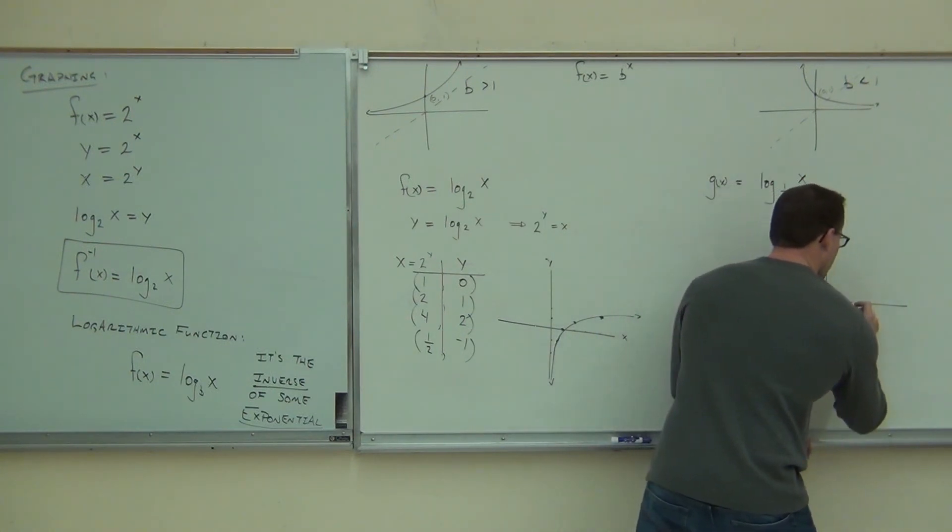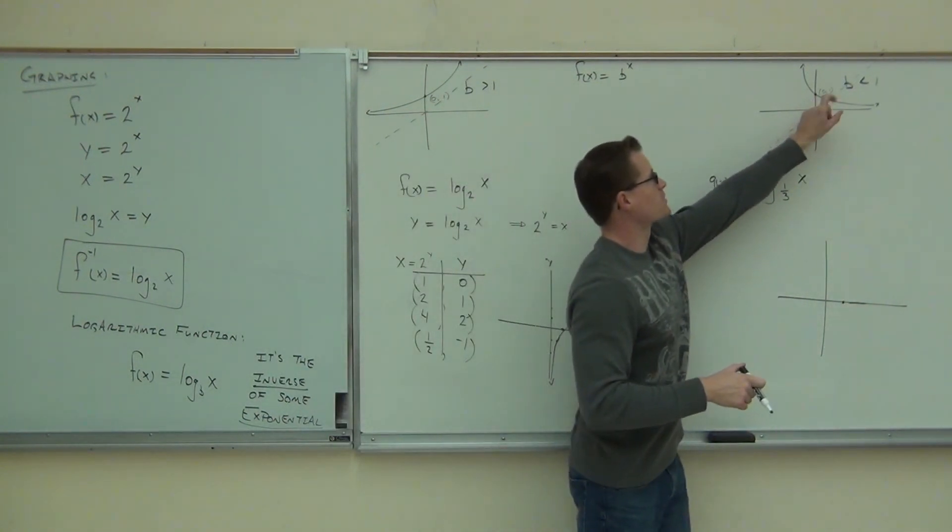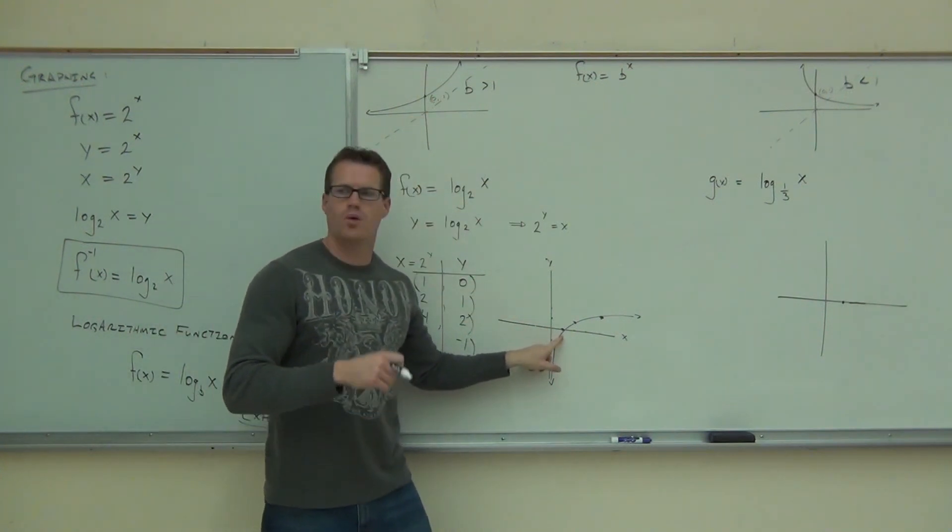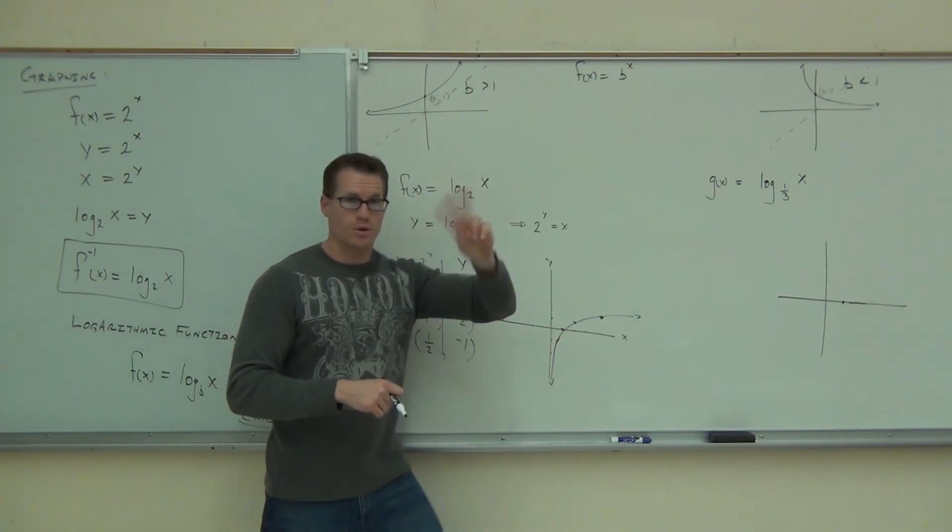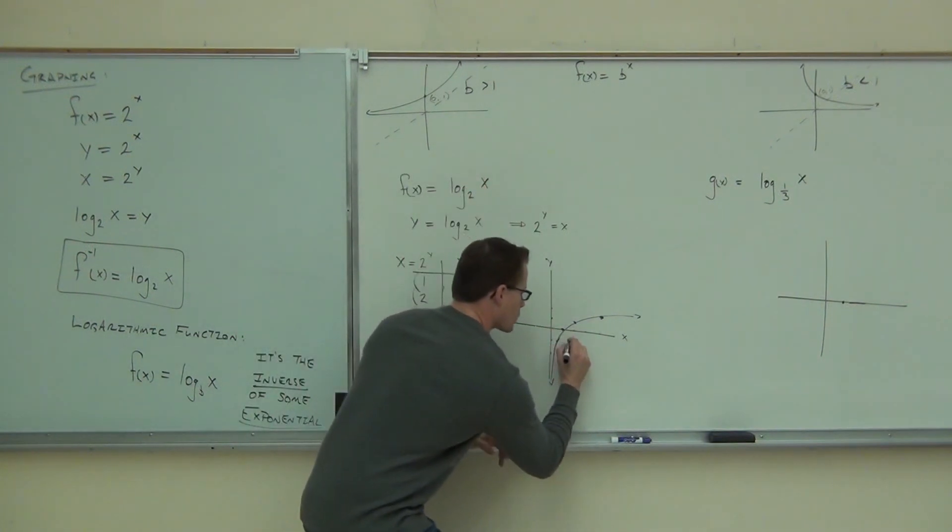By the way, I do want you to see this. If this graph crosses at 0, 1, and this graph crosses at 0, 1, what are these graphs always going to cross at? 1, 0. You flip x and y, right? That's how you find an inverse. So these are all going to cross at 1, 0.